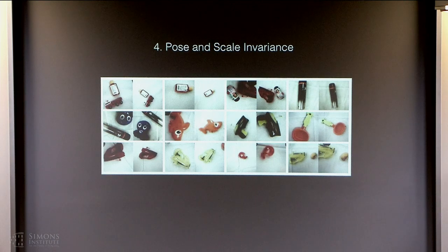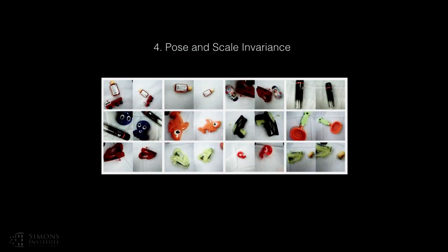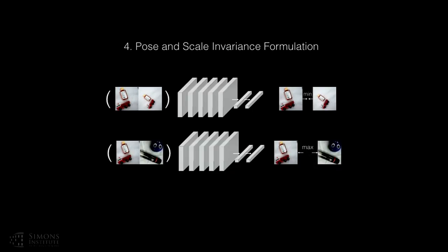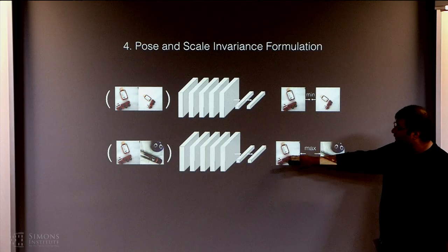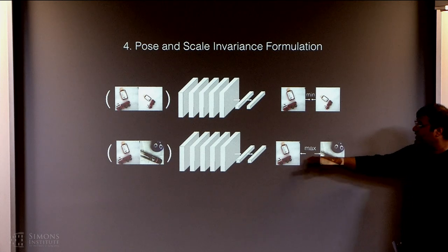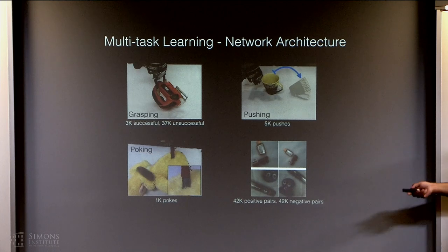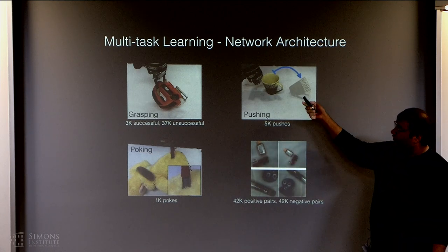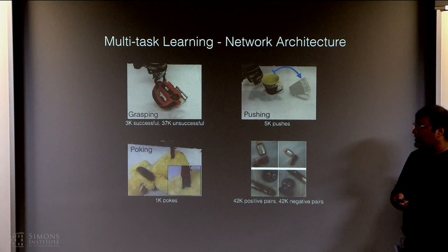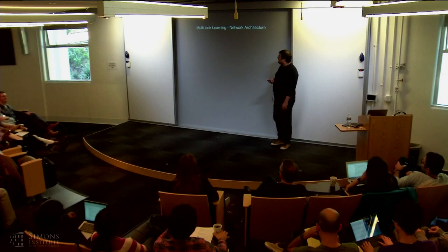The fourth task is viewpoint invariance: the robot takes an image of an object from one viewpoint, then turns around and takes the image of the same object from a different viewpoint, doing this 100,000 times, collecting viewpoint invariance data using the same contrastive loss — images from the same object should be close in feature space, images of different objects should be far away. We collected 80,000 viewpoint tasks, 1,000 pokes, 5,000 pushes, and 40,000 grasping data points, and learned a multi-task network.